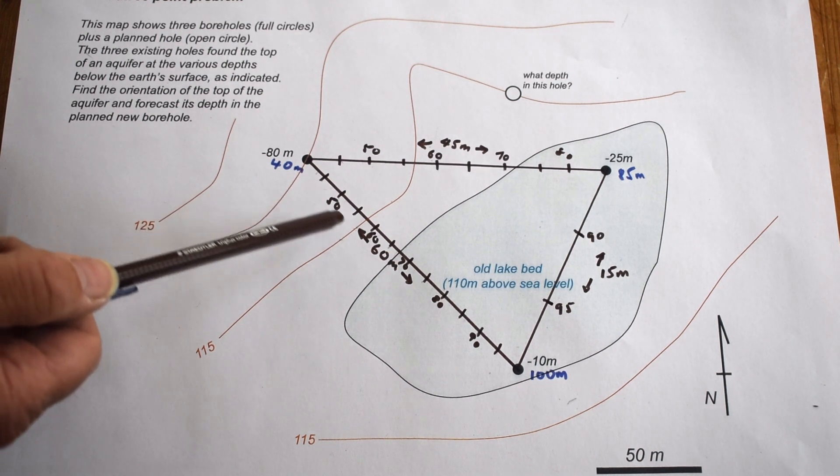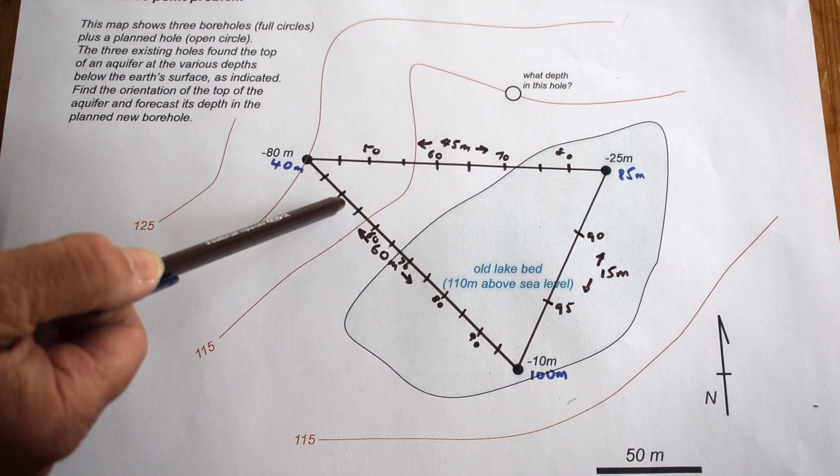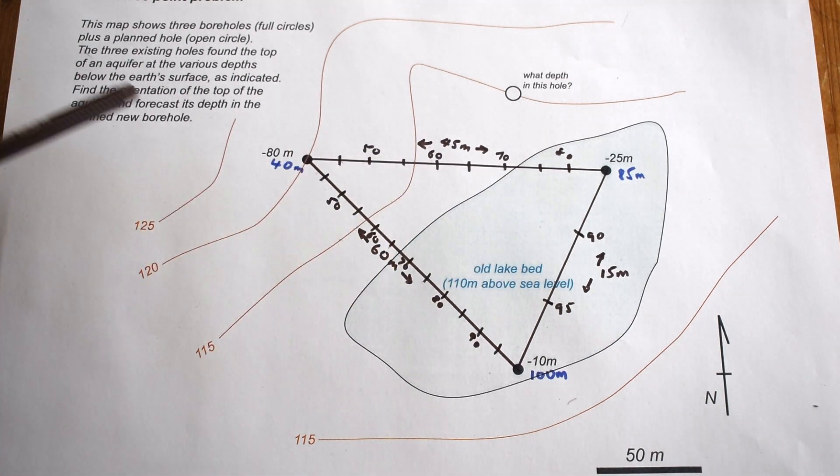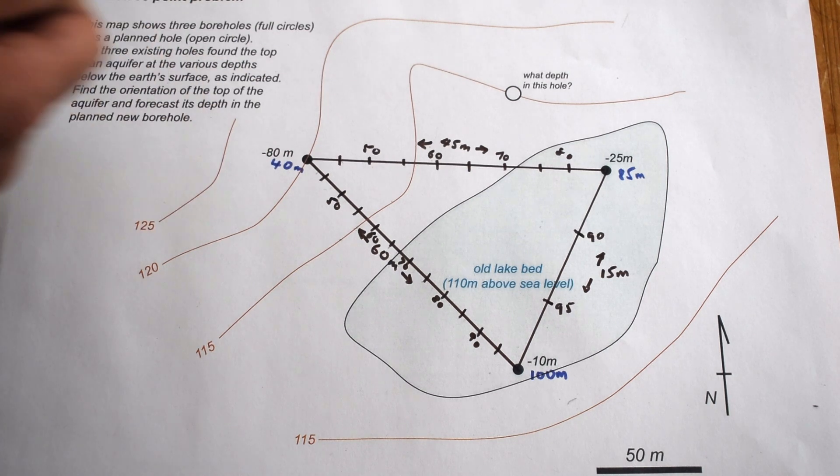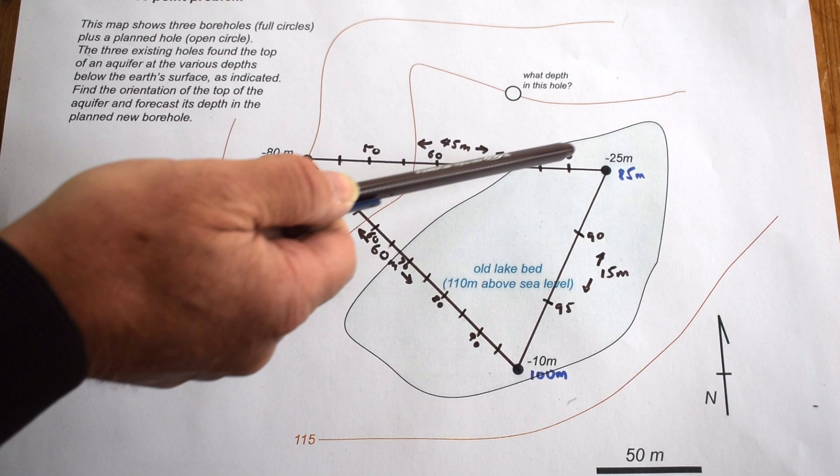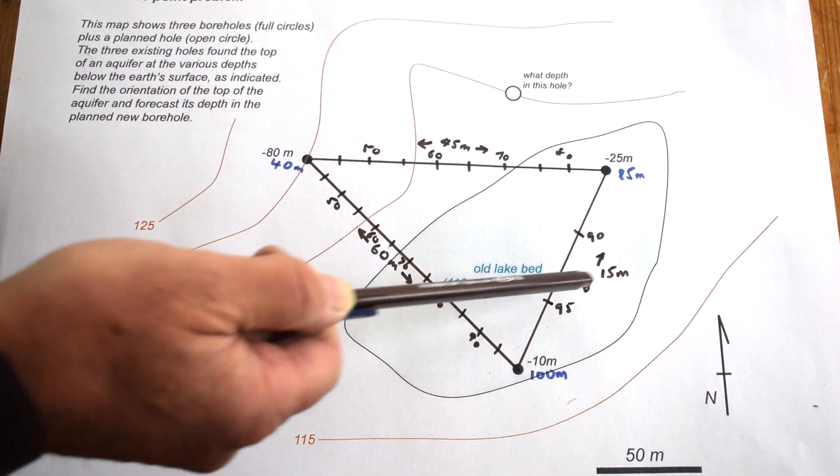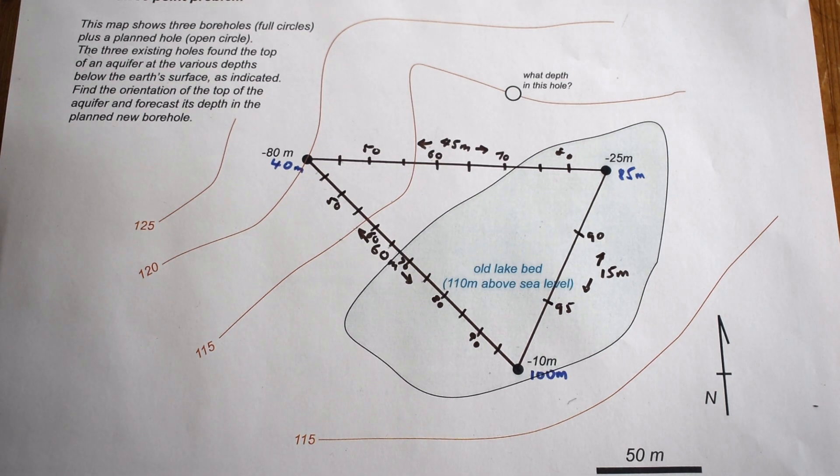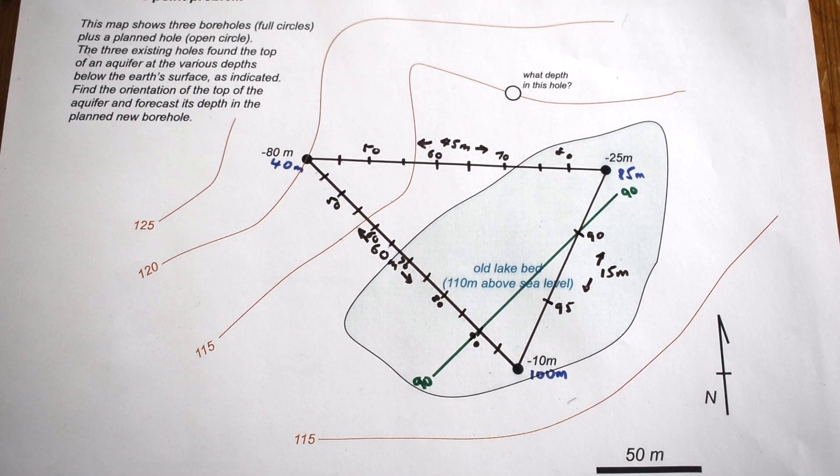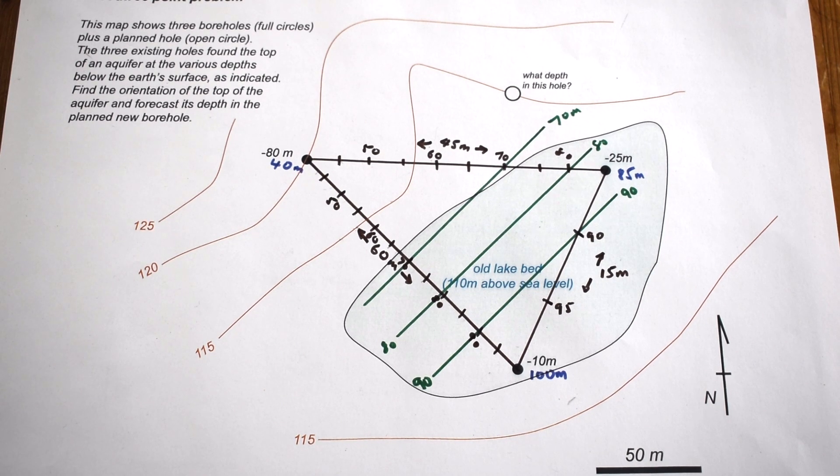To get structure contours, we just have to join these up, so join 50 to 50, 60 to 60, 70 to 70, 80 to 80, 90 to 90. Then we can interpolate the other ones, the five meter interval ones in between once we've done that. So here are the structure contours on our aquifer: 50, 60, 70, 80, 90 that we've constructed.